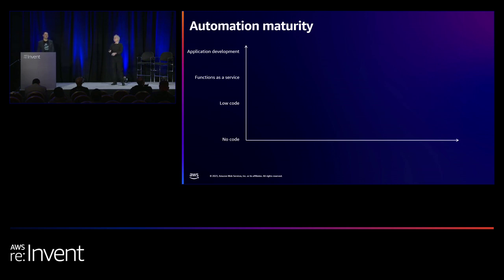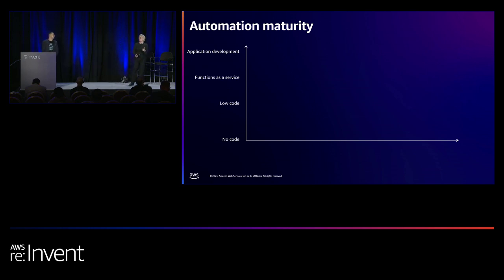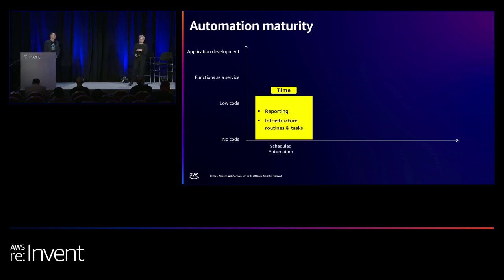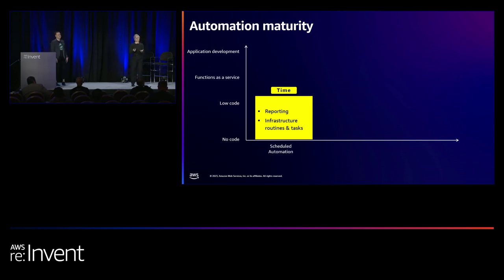Getting back to the idea that automation is not a silver bullet, it's also not something where we have to go all in from the get-go. We have to start somewhere. We're looking for repeatable things and expected things. Where do we start? How many people have cron jobs or scheduled jobs in their day-to-day? I would assume probably 100%.